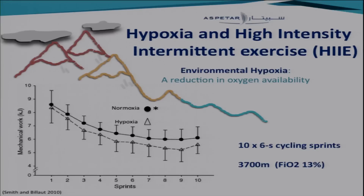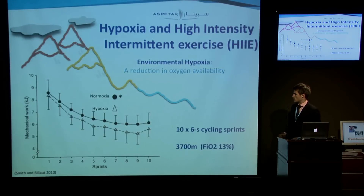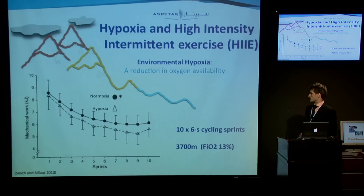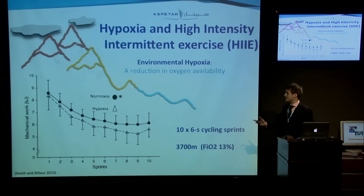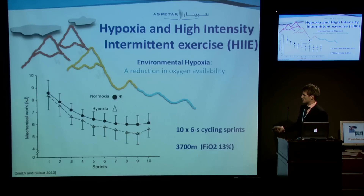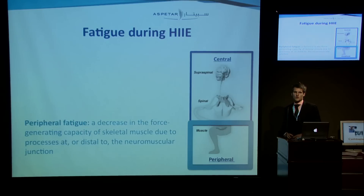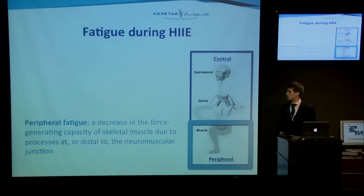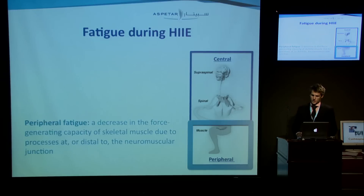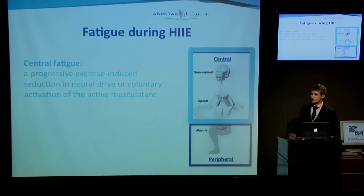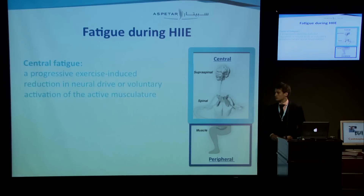Under hypoxic conditions, high intensity intermittent exercise is impaired. At an altitude of 3,700 metres, early and larger decrements are seen in mechanical work during 10 six-second sprints with 30 seconds of recovery. Under sea level conditions, this inability to reproduce the first sprint has been attributed to both central and peripheral factors. Peripheral mechanisms result in decreased force-generating capacity of skeletal muscle at or distal to the neuromuscular junction, while central factors result in a progressive exercise-induced reduction in neural drive or voluntary activation of the active musculature.